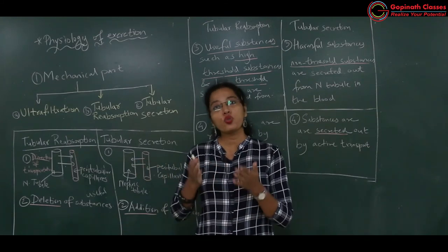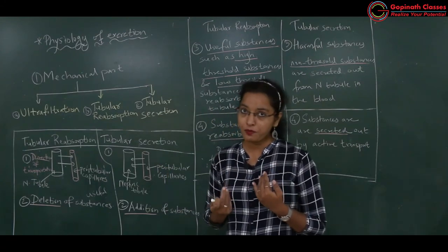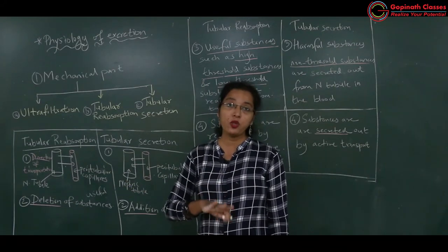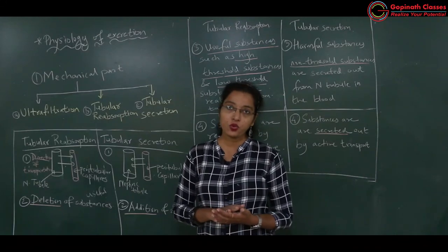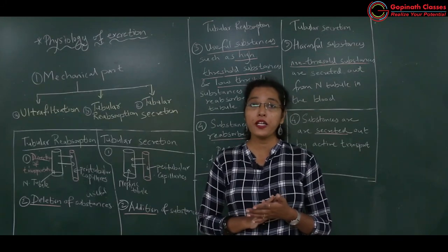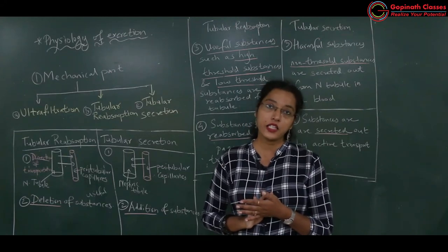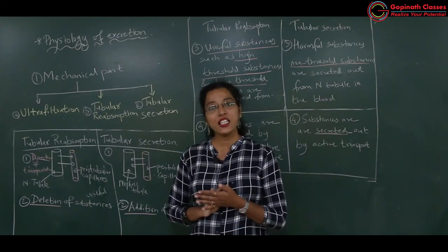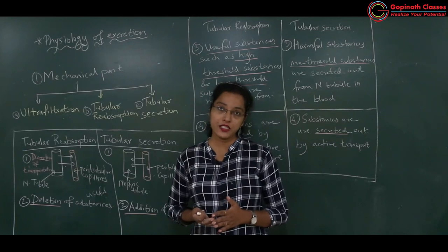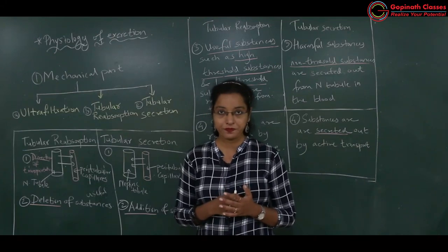The DCT and collecting duct handle secretion because they are the last parts of the nephron — whatever harmful substances have not yet been removed are removed there, from the peritubular capillaries into the tubule. Please remember these important exam questions: where does maximum tubular reabsorption occur (PCT), and where does maximum tubular secretion occur (DCT and collecting duct). In the next lecture we will study which substances are reabsorbed and which are secreted in the PCT. Thank you.